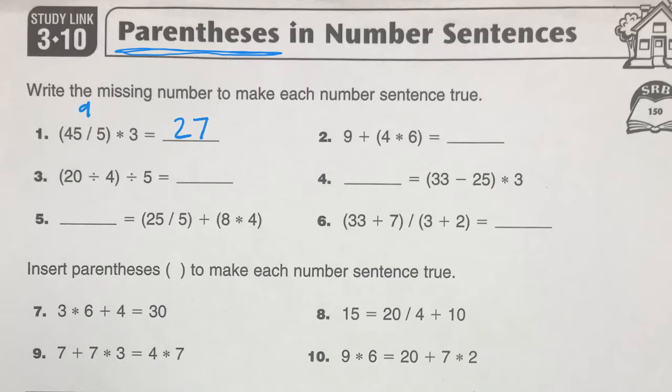Alright, for the next one, 4 times 6 in parentheses. So we do that one first. That was 24. And add that to 9. Your answer is going to be 33. Okay, the next two I think you can probably do on your own. So let's go down.